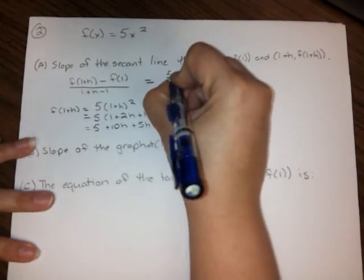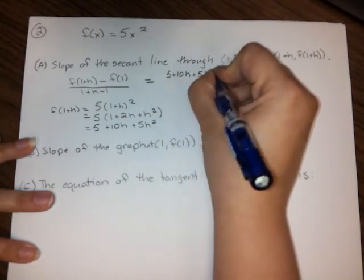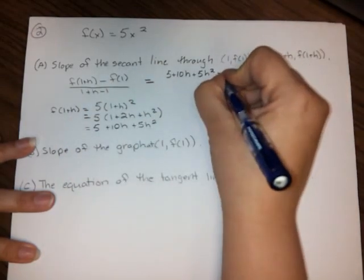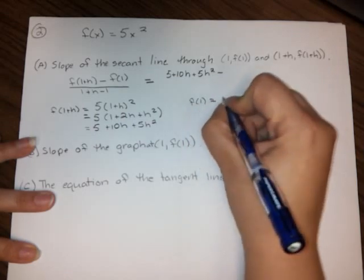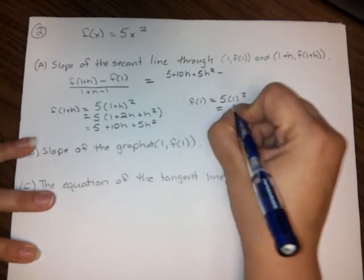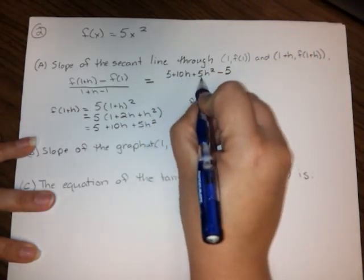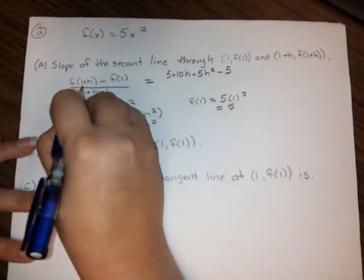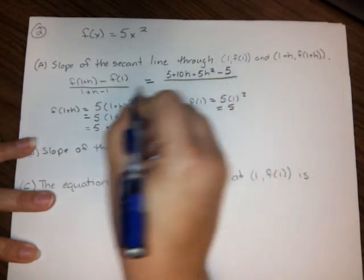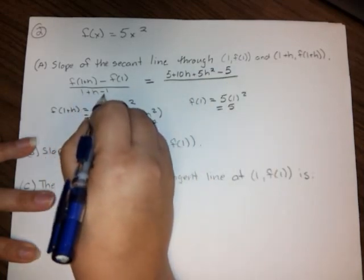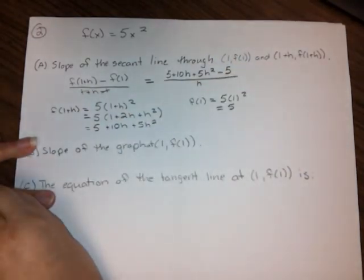So that's this piece of the puzzle here. And I'll go ahead and fill that in. So 5 plus 10h plus 5h squared. Now I need to subtract f of 1. So that means I need to plug 1 into my original function. So that's 5 times 1 squared, which is just 5. So now I've got 5 plus 10h plus 5h squared, that was my f(1 plus h), minus 5, which was my f(1). And I put that all over... and you'll notice here we've got 1 plus h minus 1. Those 1s cancel each other out, and that's just all over h.